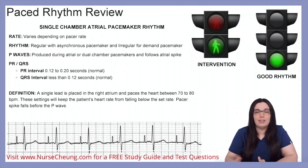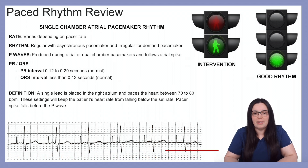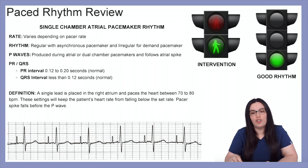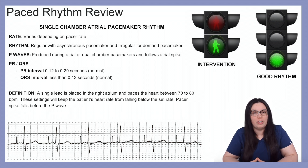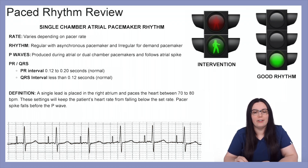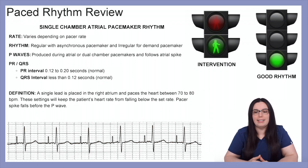The rate is really dependent on what the pacemaker is set at. The rhythm can be regular with asynchronous pacemakers and irregular with demand pacemakers. P waves are produced during atrial or dual chamber pacemakers and follow an atrial spike. The PR interval should be normal between 0.12 to 0.2 seconds, and the QRS should also be normal at less than 0.12 seconds. A single lead is placed in the right atrium and paces the heart between 70 to 80 beats per minute.